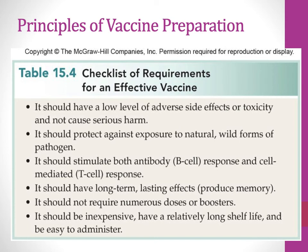With an ideal vaccine, we want to minimize the number of doses or boosters because with each additional dose there is lower compliance — you lose individuals. If you have a vaccine requiring three doses, like the Hepatitis B vaccine, you might get many people for the first one, fewer for the second, and even fewer for the third. Then those individuals don't have full protection. We also want to make sure it's affordable — inexpensive — and with that, a longer shelf life, because a longer shelf life makes the vaccine cheaper.